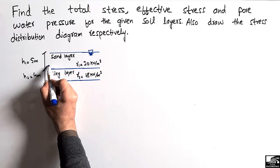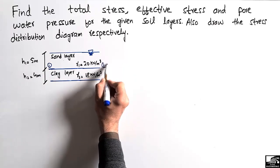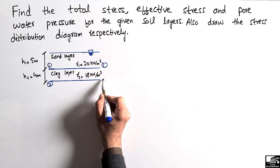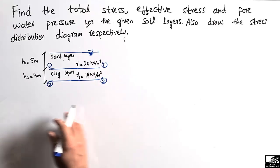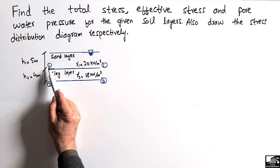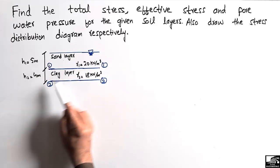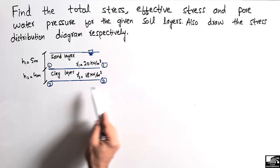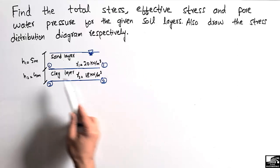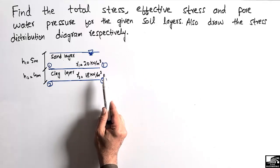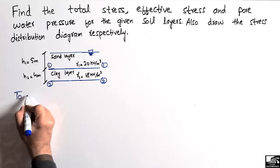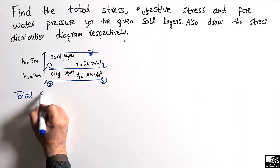To start with the stresses, we first give names to the sections. Let's call this section 1-1 and this section 2-2. We have to find the stresses at section 1-1 first, then at section 2-2, and then draw the stress distribution diagram.